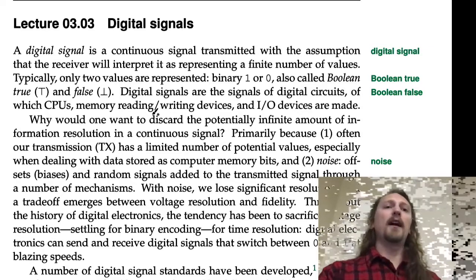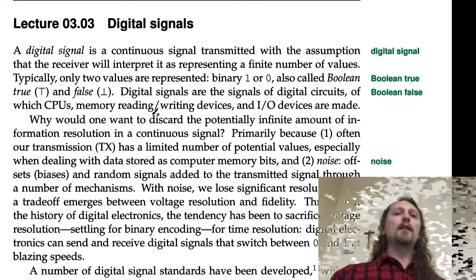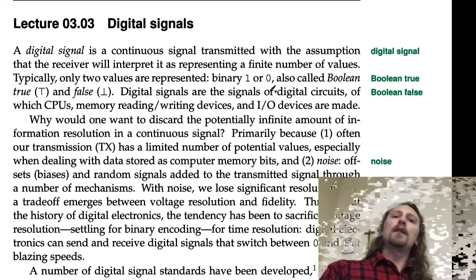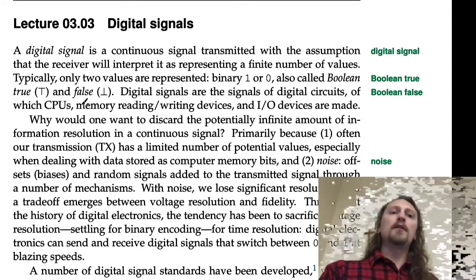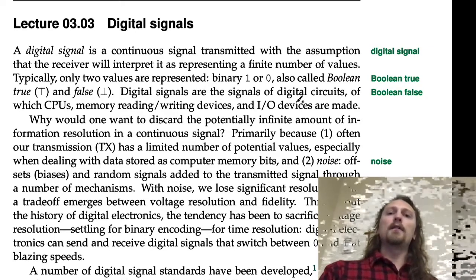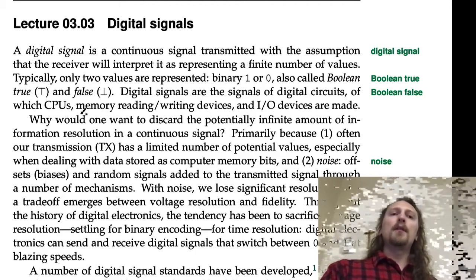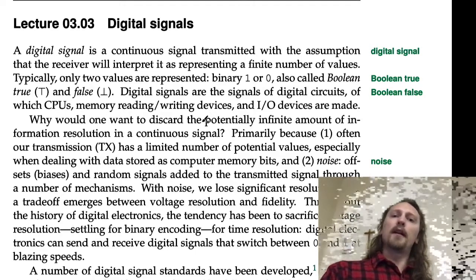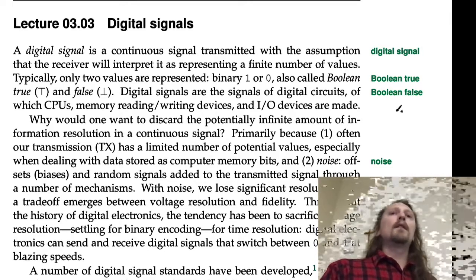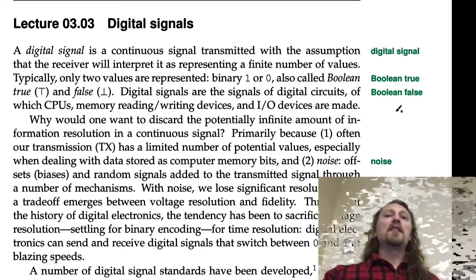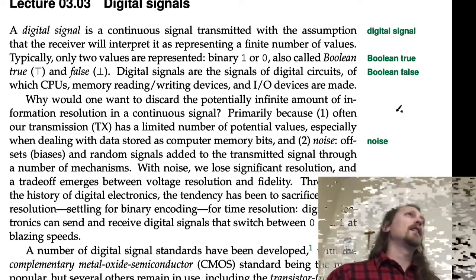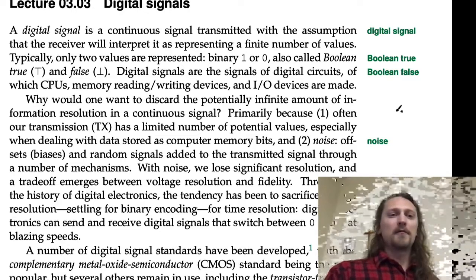Typically, only two values are represented: binary 1 or 0, also called Boolean true and false. Digital signals are the signals of digital circuits, of which CPUs, memory reading/writing devices, and input/output devices are made. So everything these days, so much stuff is digital—even your music—it's all digital.